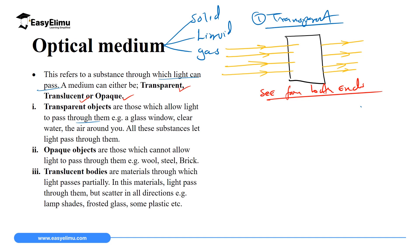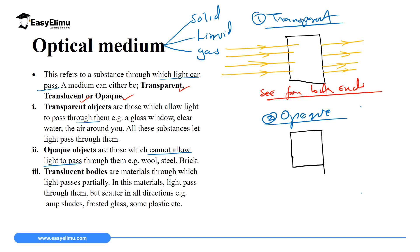The second category is opaque optical medium. For opaque optical medium, these are media through which light cannot pass — light is completely blocked. For example, if you have an opaque object like a stone, a brick, or a steel metal, and you allow four rays of light to come in contact with it, the light will not pass through and will be blocked by this opaque object.